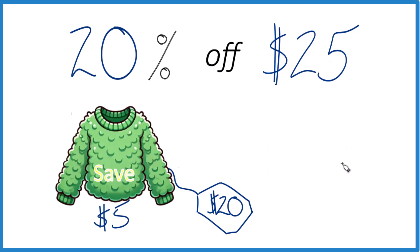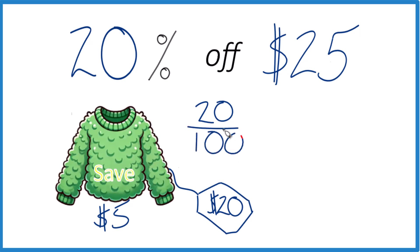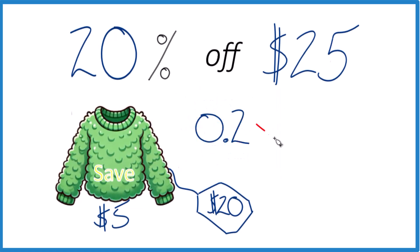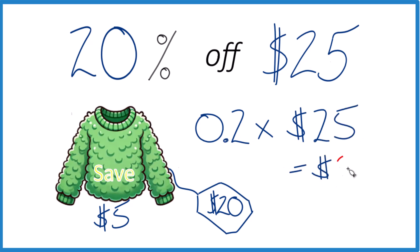The way you get that is: 20% — percent means per 100, or over 100. So we divide 20 by 100, and you can do it on a calculator or in your head — you end up with 0.2. Then you multiply that times 25, and 0.2 times 25 equals $5.